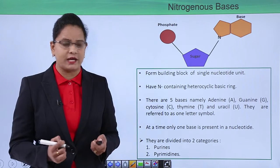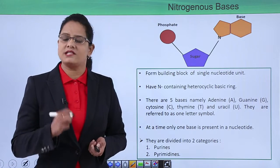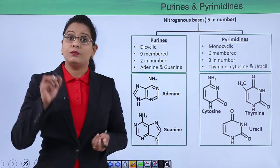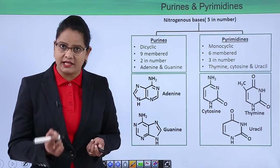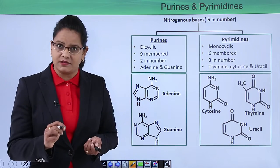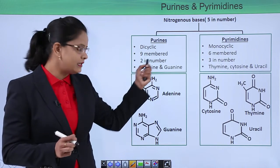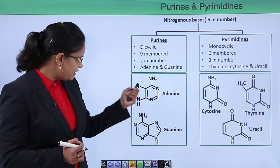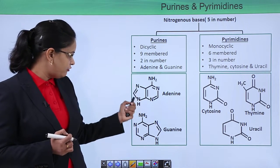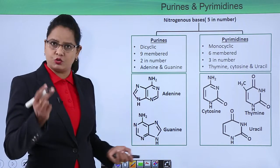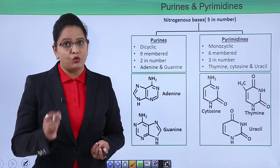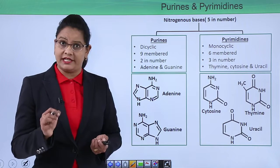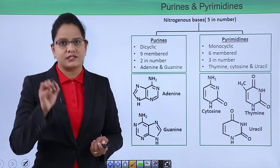These five nitrogenous bases are categorized into two types: purines and pyrimidines. Purines are dicyclic, meaning they have two rings with nine atoms total — they are nine-membered dicyclic compounds. Only two purines exist: adenine (A) and guanine (G). You can see from the structure that they have four nitrogen atoms. Pyrimidines, in comparison, are monocyclic — they have a single hexagonal ring, making them six-membered. There are three pyrimidines: thymine (T), cytosine (C), and uracil (U).